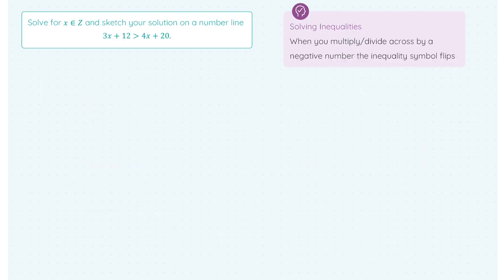Moving on to a busier scenario, we're asked here to solve for x an element of Z, which is the integers, which is our positive and negative whole numbers. And we want to sketch our solution on the number line. We've 3x + 12 > 4x + 20. We've an x on both sides of the inequalities here, so we've a bit of work to do. What I'm going to do is just start solving as if it was an equation. I'm going to get the letters to the left and the numbers to the right.